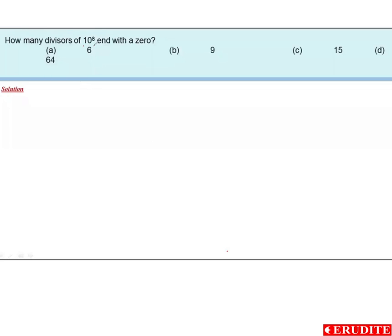How many divisors of 10 to the power of 8 end in 0? First of all, 10 to the power of 8 is 2 to the power of 8 into 5 to the power of 8.